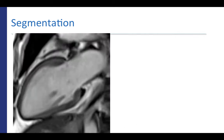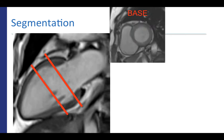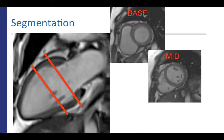This is a representative 2-chamber cardiac MRI SSFP image, which will be used to show the relative locations of representative short axis slices. Starting with a basal short axis slice, followed by a midventricular short axis slice. You'll note that the papillary muscles are typically seen on a midventricular short axis slice, in comparison to the basal short axis slice, where you do not typically see papillary muscles.